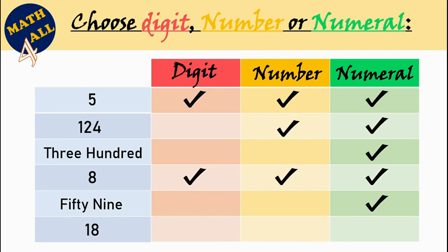Excellent. The next example. What about eighteen? Eighteen is not a digit. Because it's two digits. It's a number. Also, it's a numeral.